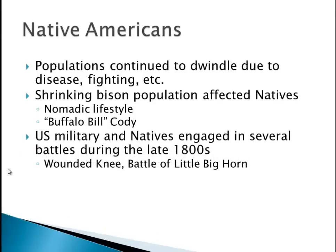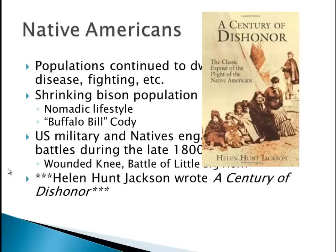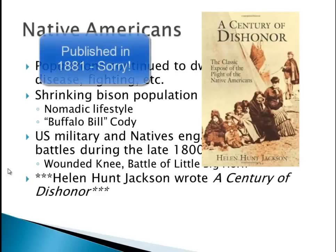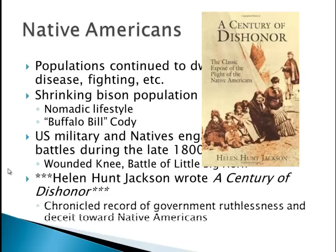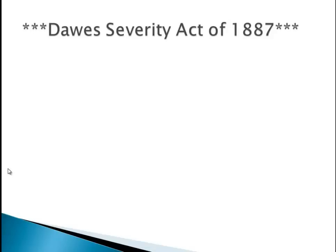Another challenge was the U.S. military — natives engaged in several battles during the late 1800s, two of them: the Battle of Wounded Knee and the Battle of Little Bighorn. Shortly after, in the 1890s, Helen Hunt Jackson wrote a book called A Century of Dishonor. This is a very important book you will absolutely need to know for the AP exam. She looks at basically the 100-year time period and chronicles the record of government ruthlessness and deceit towards Native Americans — violation of treaties, kicking them off their land, fighting with them, etc.